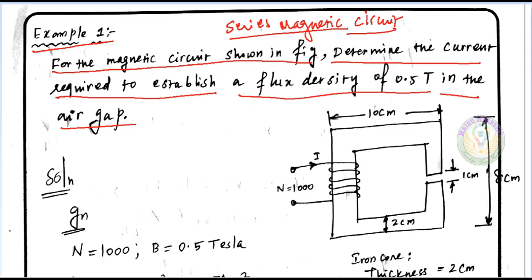In the figure, this is a type of magnetic circuit with an air gap. The flux density B is 0.5 tesla in the air gap. We need to find the exciting current. So using important formula topics, we have to find the exciting current related to some formulas.